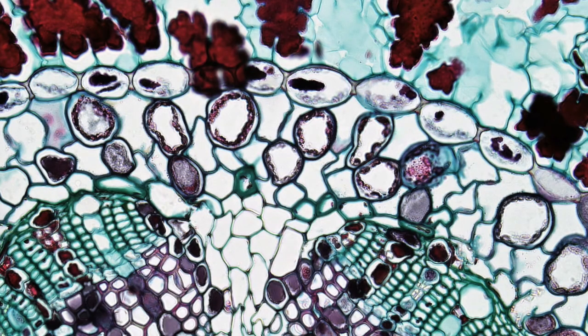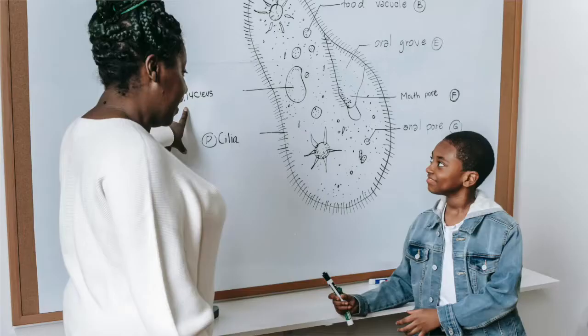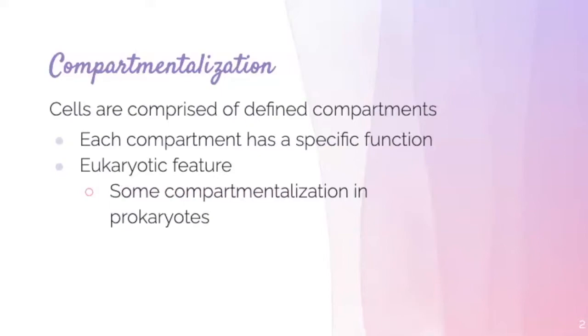Cells have membranes or special spaces that allow them to establish and maintain environments that are different from their external environments in order for certain cellular processes and reactions to occur. Overall, cells are comprised of different defined compartments. In eukaryotic cells, we know these as organelles. Each compartment has a specific function, and generally it is a eukaryotic feature, but there is some compartmentalization in prokaryotic cells as well. Eukaryotic cells have well-defined compartments.